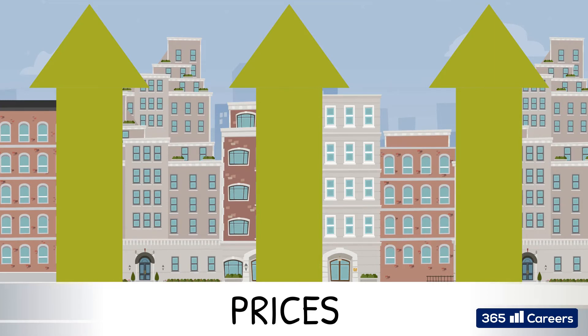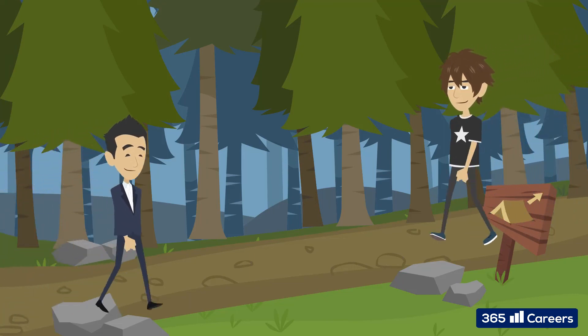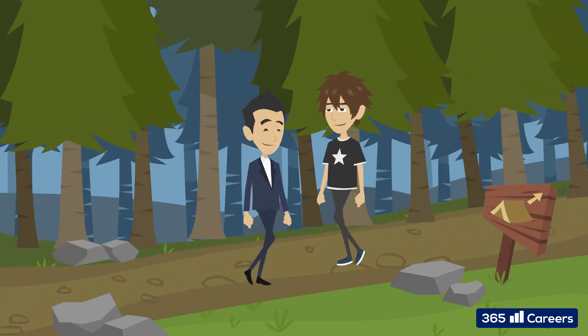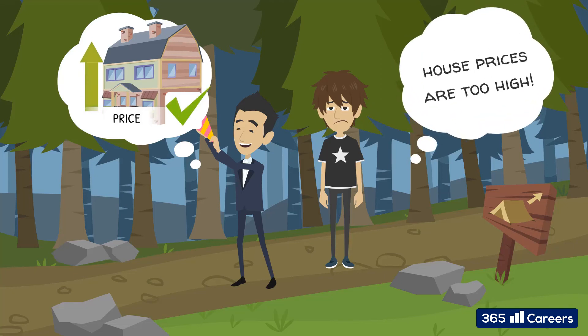The prices of real and financial assets, like global equities and real estate, rose significantly, thereby debasing the store-of-value aspect of fiat currency. Social inequality has also increased meaningfully since the global recession. This is again due to the huge amount of liquidity, or new money supply, entering the global financial system and pouring into asset classes such as real estate, stock markets, and venture capital. This, of course, inflated their prices.